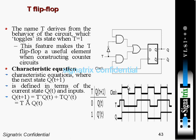Looking at the timing diagram: when T is one at this passage, the output will toggle. If the previous output is zero it becomes one; if the previous output is one it becomes zero. Here the previous output is zero and T is one, so the output becomes one. At the next passage where T is zero, it maintains its previous state — remaining one throughout. Then when T is one again, the previous value is one so it toggles to zero.